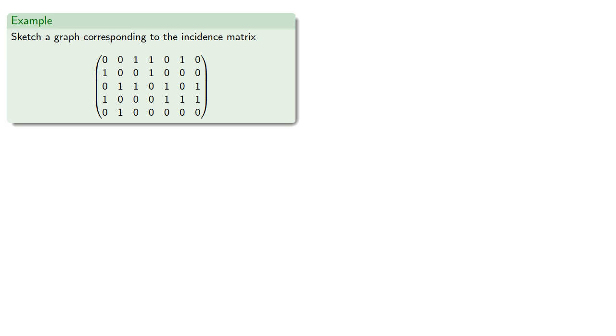And we can also go backwards. Let's sketch a graph corresponding to a given incidence matrix. Since this matrix has 5 rows, it has 5 vertices, and since this matrix has 7 columns, it has 7 edges.